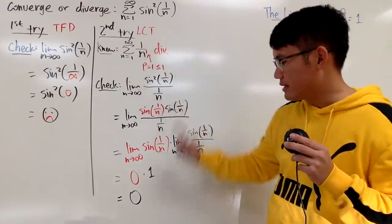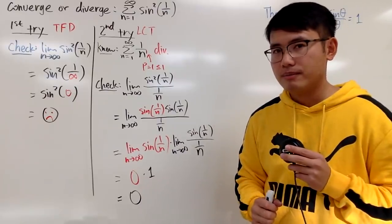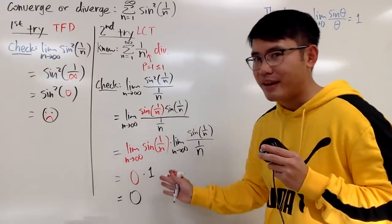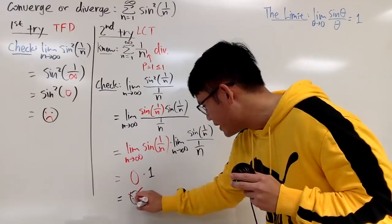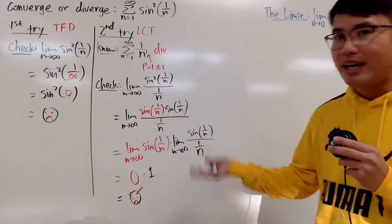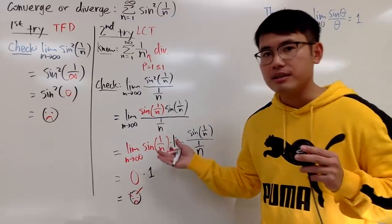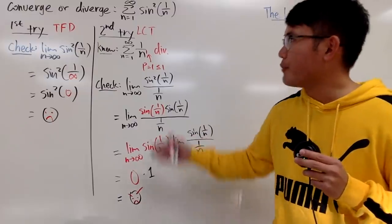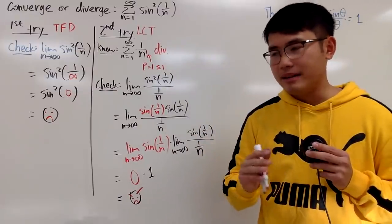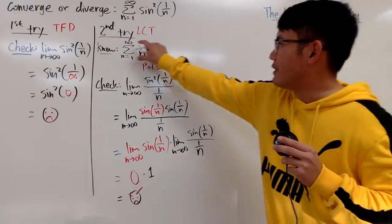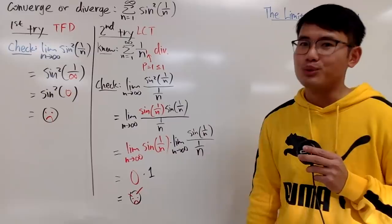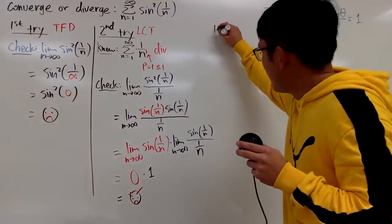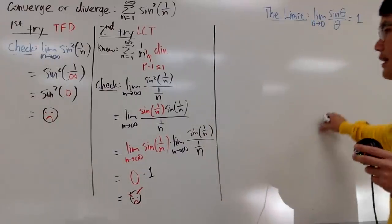For the limit comparison test, I get 0 — and that's also a sad face, an even angrier one because we did a lot more work and still cannot draw a conclusion. There is one particular situation where you can use 0 in the limit comparison test, but that's for another time. In this situation with a divergent comparison series, getting 0 means we cannot draw a conclusion. So second try also failed, unfortunately.